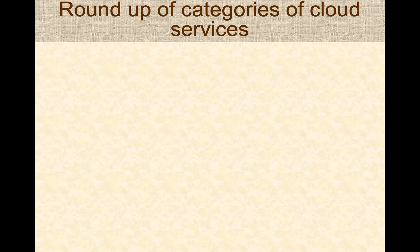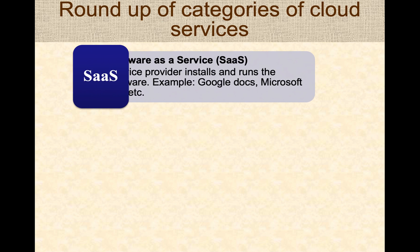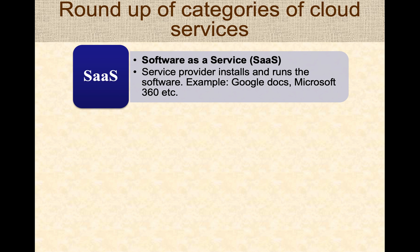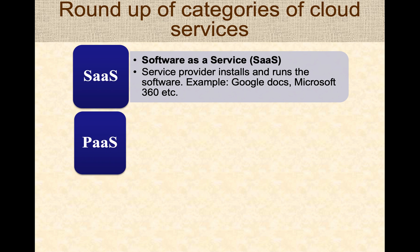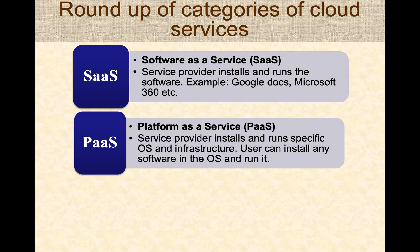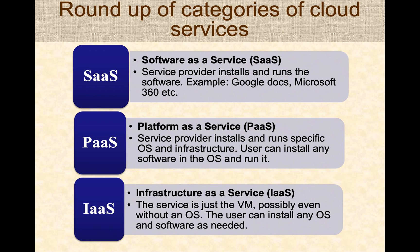To recap the different service categories: Software as a Service has the service provider run specific software like Google Docs or Microsoft 365. Platform as a Service gives you a specific platform or custom set of software, operating systems, and tools, letting you deploy applications like PHP or Python on top. Infrastructure as a Service is the most flexible — the cloud provider gives you a VM and you can customize any operating system or software you want.